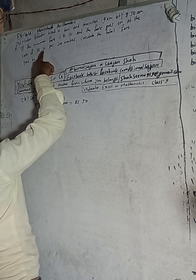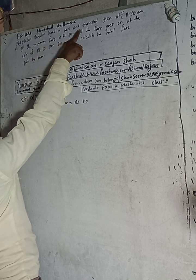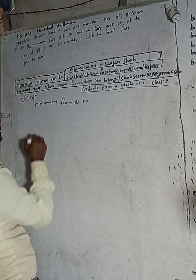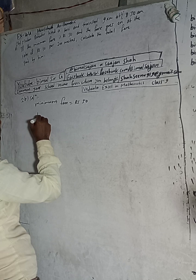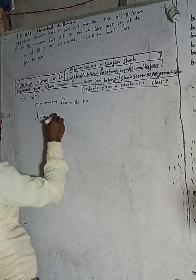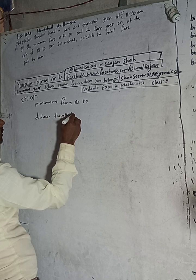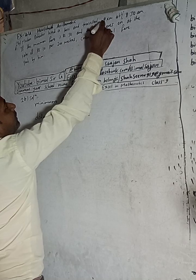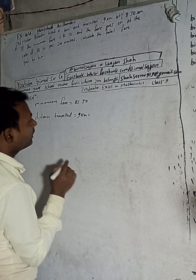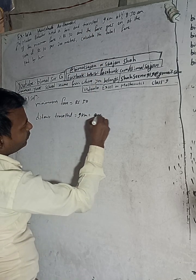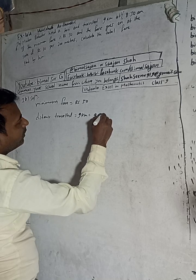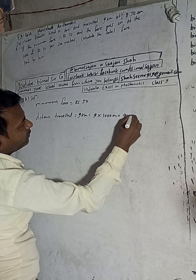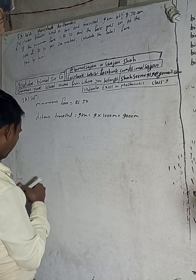To calculate the total fare, note that Madan Bahadur hired a taxi and travelled a total distance of 9 km. So the distance travelled is 9 km, which equals 9 into 1000 meters, giving us 9,000 meters.